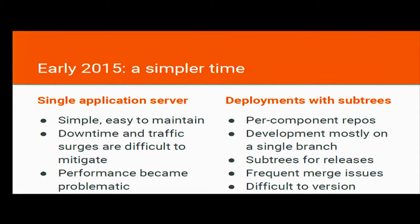In early 2015, things were quite simple though. We had a single application server, nice and easy to maintain — we weren't having to do synchronized deployments. But we had a few problems with downtime. Doing maintenance was difficult; we couldn't take an individual server out of rotation. And it's difficult to deal with traffic surges in that environment — you don't have any redundancy, and one site getting a sudden spike in traffic can have a really nasty effect on all of the others. It became a general performance problem with really bad disk IO.